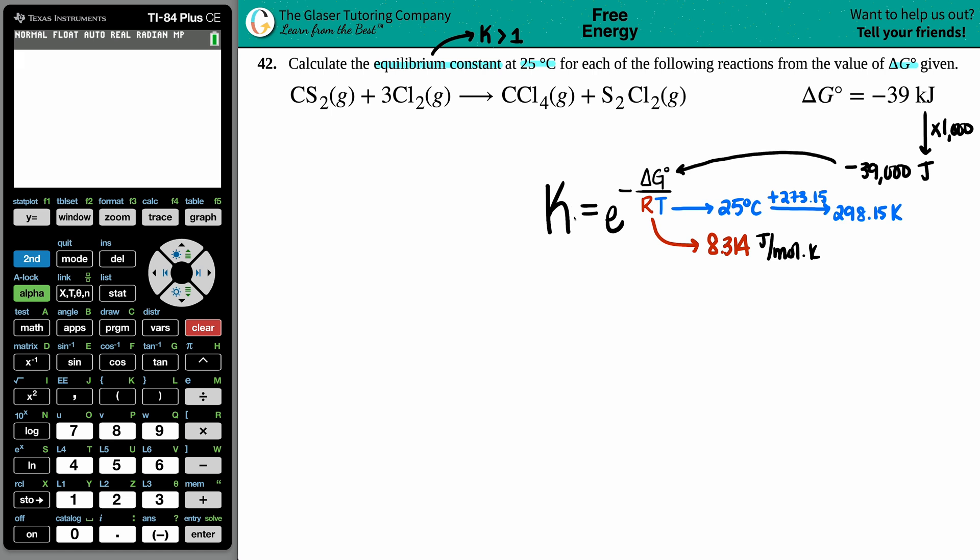Okay, we got everything covered. Let's just write it in: equilibrium constant equals the e on the calculator, all raised to the negative something. Now the negative is in the formula, but now we have another negative value, so negative 39,000 and we're going to divide it by those two values.